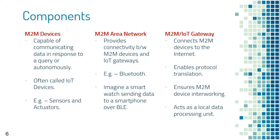The third component is the M2M or IoT gateway, a very important piece of the IoT ecosystem. Its main functions are: connecting M2M devices to the Internet, enabling protocol translation and M2M device interworking, and in edge computing scenarios acting as a local data processing unit.